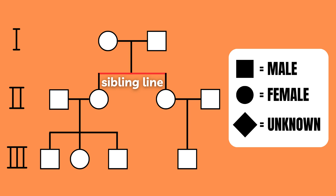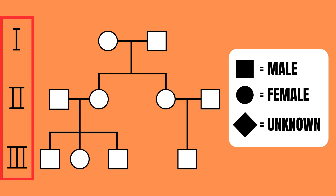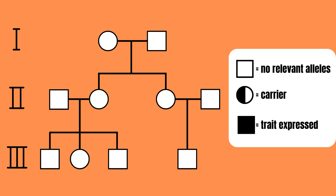The sibling line is drawn above the individuals of the next generation, and each generation is noted by a Roman numeral. Pedigrees are often used to track recessive traits. In these cases, non-shaded shapes represent individuals that are homozygous dominant, meaning that they have two dominant alleles for the gene in question.